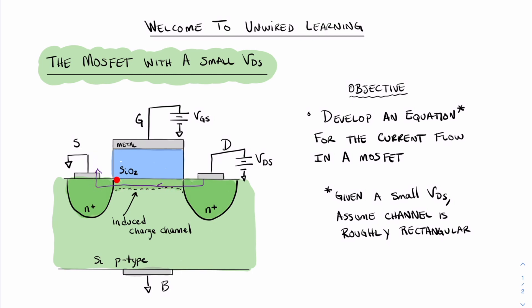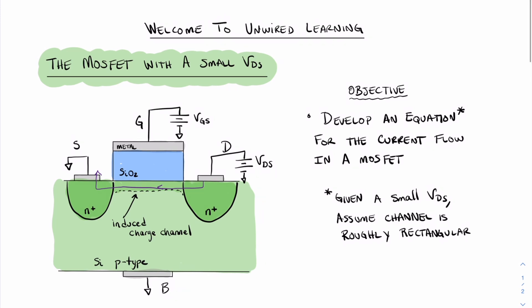And this will occur in this induced channel that is a result of the voltage from gate to source, as we learned about in the MOS capacitor video. When we consider this channel, we recognize that that channel is roughly rectangular if the voltage from drain to source is very small.